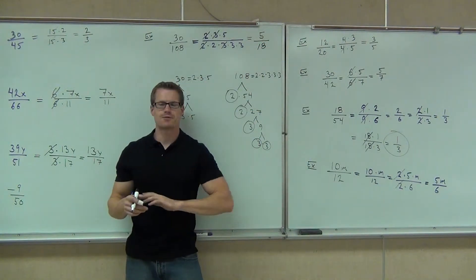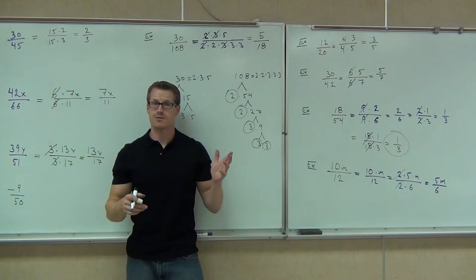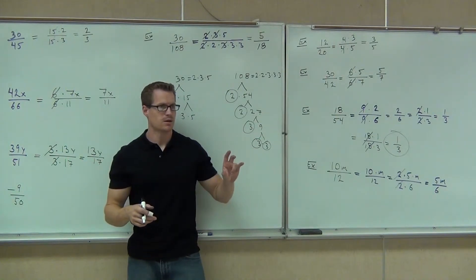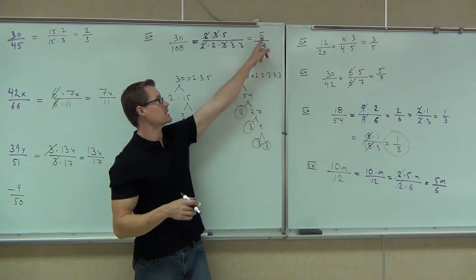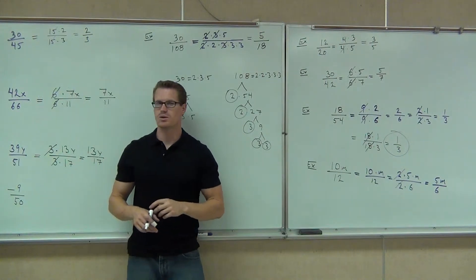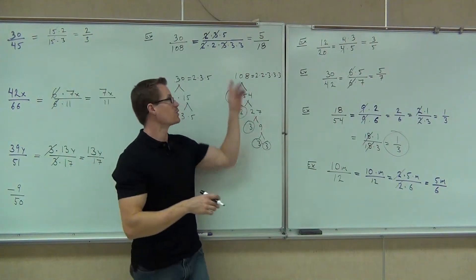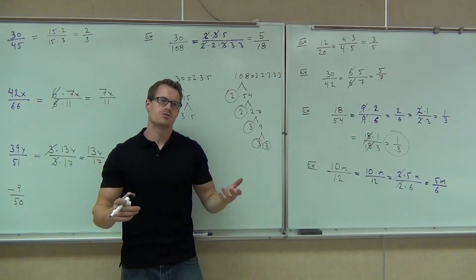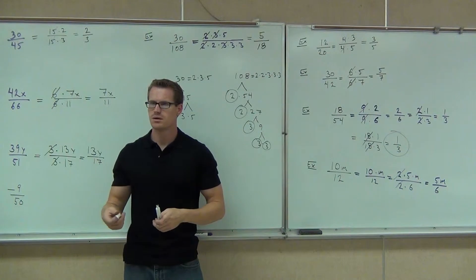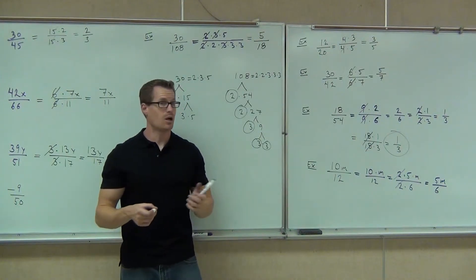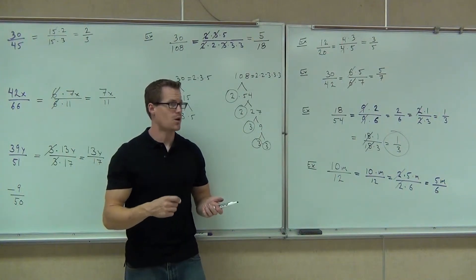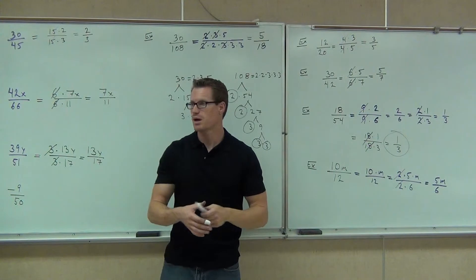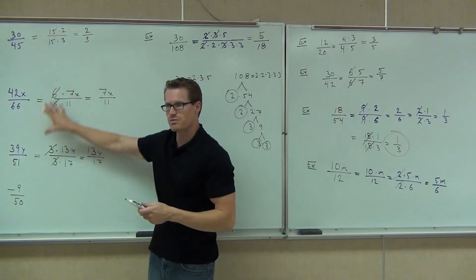This will work every time, and it will be completely reduced if you do it correctly. Look down here — can you reduce 5 or 18? No. If you would have been able to, it would have been done right there. That's a final answer. Did that make sense? Yeah. So it's a lot longer a process than just finding our biggest number, that's why I teach most of it this way.